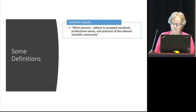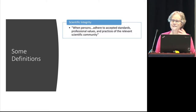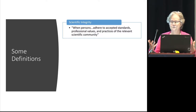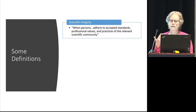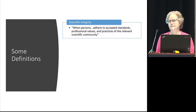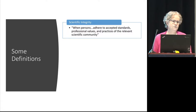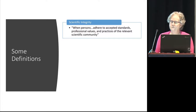We're going to start with some basic definitions when it comes to scientific integrity, because that's a big word that has a lot of different meanings when you ask individuals. When we talk here about scientific integrity, we're talking about when persons adhere to accepted standards and professional values and practices of the relevant scientific community, because it may differ a little bit with different areas of science.